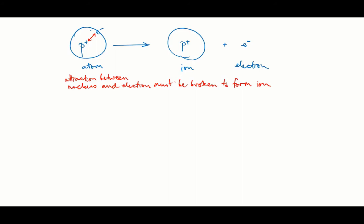This process is called ionization, and it's always endothermic. The first ionization for an atom is when you take the neutral atom and you remove one electron from it, which forms a plus one ion.